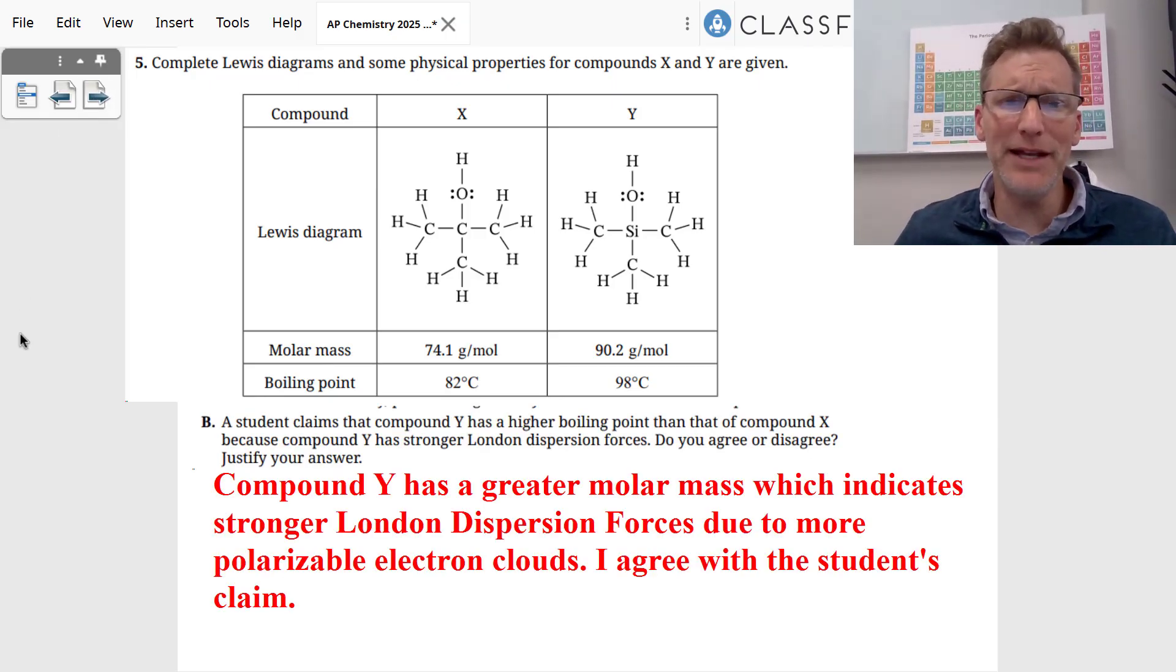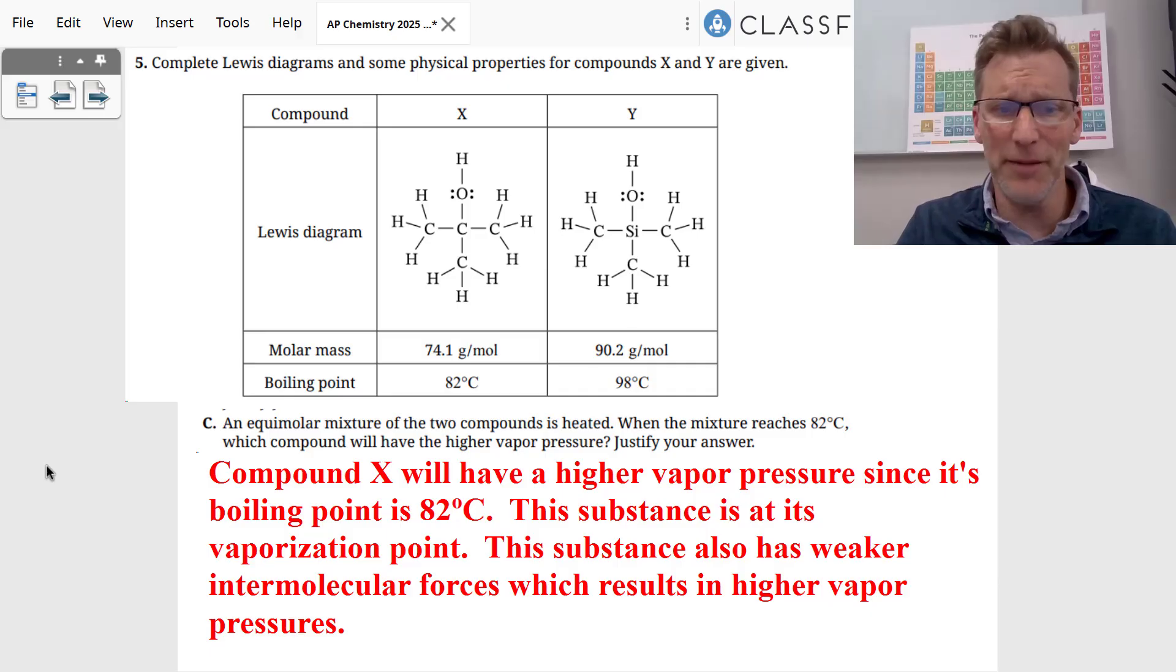In part B, the student said that compound Y had a higher boiling point because it had stronger London dispersion forces. Both of them have that OH, which means both have hydrogen bonding attractions. However, the biggest difference is their molar mass. Compound Y has a greater molar mass, which indicates stronger London dispersion forces due to more polarizable electron clouds. I agree with the student's claim.